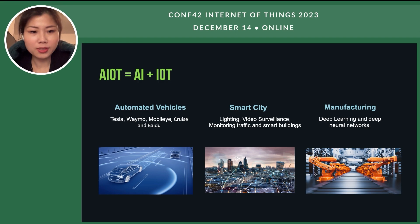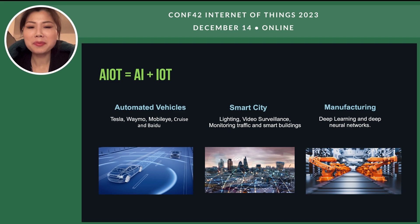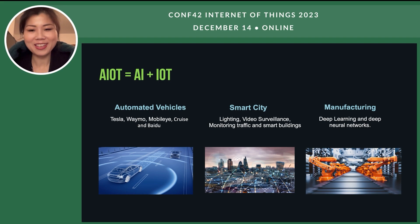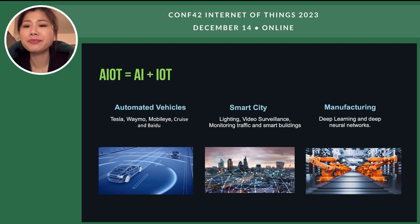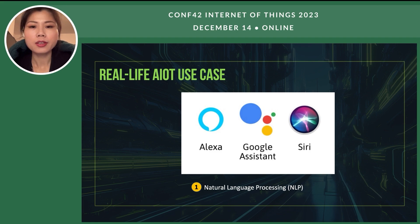The first example is automated vehicles. You may recognize some famous brands like Tesla and Waymo, which are pioneers in this industry. The second is smart city — for example, lighting. Our company is a lighting leader, and we do surveillance, traffic monitoring, and smart buildings. For manufacturing, they take advantage of deep learning and deep neural networks to do product quality checks in the production line.